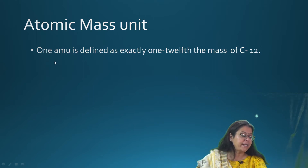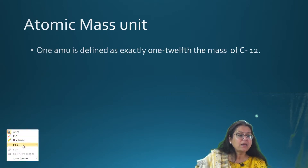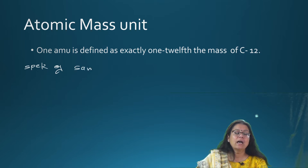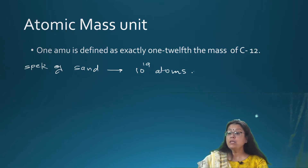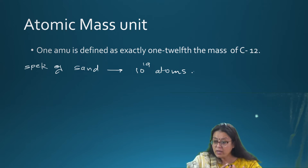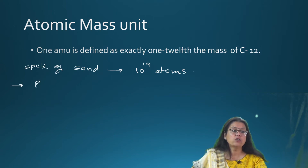What happens is that if you take the smallest part of any matter — for example, sand — even the smallest speck of sand contains approximately 10 raised to power 19 atoms. So if we take even the smallest speck of sand, it has 10 raised to power 19 atoms. Calculating the absolute mass of so many atoms is not easy, so rather than calculating the absolute mass, we use a relative term.